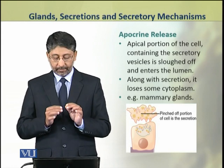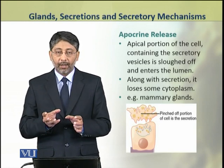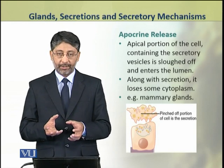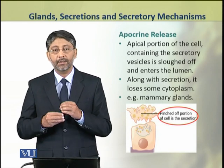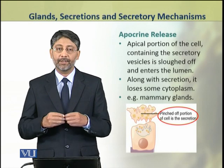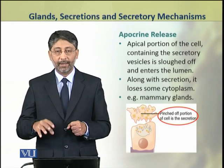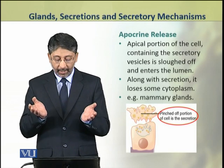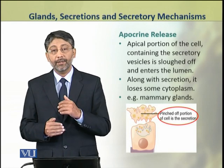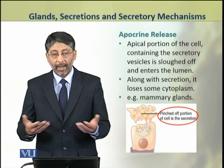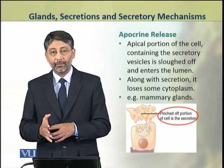In apocrine release, the secretory vesicles are gathered in the apical portion of the cell, and this portion of the cell containing all the secretory vesicles is sloughed off from the cell. This method is found in mammary glands during milk secretion.